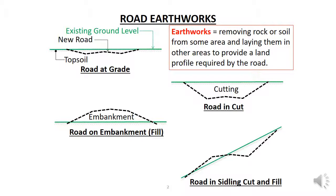Road sections may be at or close to the existing ground level, in which case the earthworks just involves removing the topsoil and shaping the road as shown in the top illustration. This is usually referred to as the road being at grade, which means all you need to do is shape or grade it using the grader.